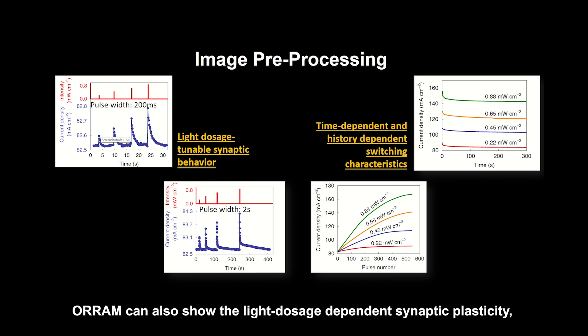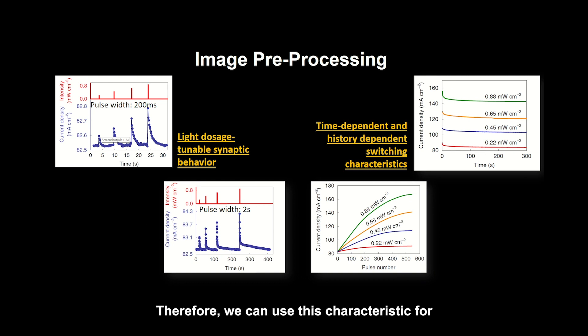The RAM device can also show light dosage-dependent synaptic plasticity, including both light intensity plasticity and time-dependent plasticity. Therefore, we can use these characteristics for image preprocessing.